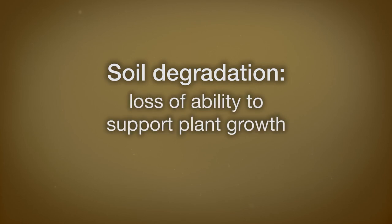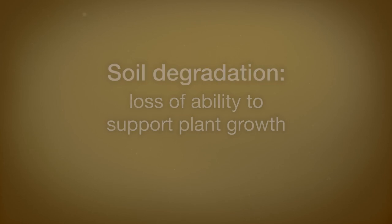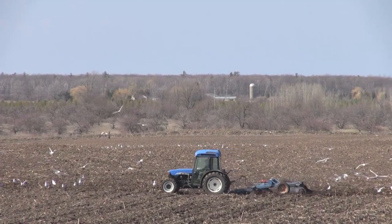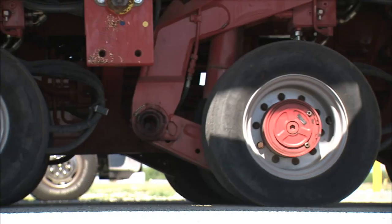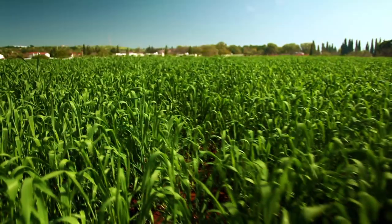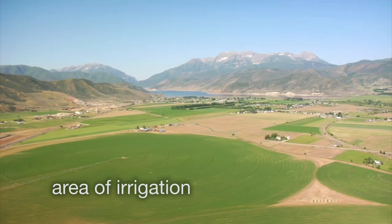Soil degradation and erosion is also important to consider. Soil degradation is the loss of some or all of the ability of soils to support plant growth. One of the main causes of soil degradation is soil erosion, which is caused by the disturbance of topsoil followed by water or wind removing the top layers of soil. Topsoil can be disturbed by removing vegetation, plowing, or soil compaction. Another form of soil degradation is nutrient depletion — soils can be depleted of nutrients by intensive agriculture and excessive irrigation.